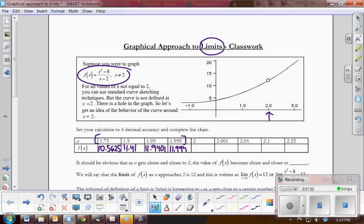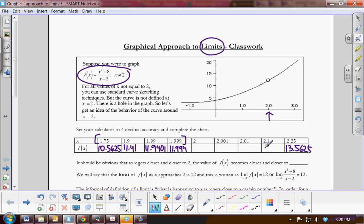Now if I come from the right, if I put 2.25, I have 13.5625. Let me minimize this. 2.1 would be 12.61, 2.01 would be 12.0601, and then 2.001 would be 12.006.